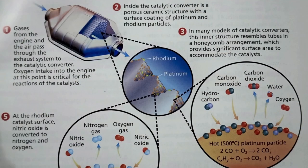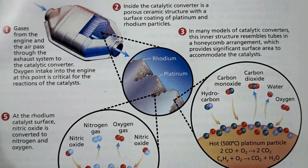In this diagram we will see how a particular catalytic converter works. In the first step, gases from the engine and air pass through the exhaust system to the catalytic converter. Oxygen intake into the engine at this point is critical for the reactions of the catalyst. As you can see here, the gases from the engine and the air both enter through this inlet, where the catalytic converter has been placed.